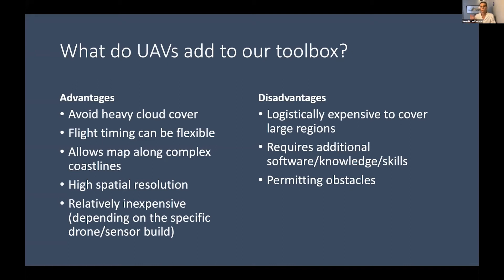Some disadvantages are that UAVs can be logistically expensive to cover large regions. For kelp forests, it's kind of the opposite of intertidal work — you can't cover as much with a drone as you can with a satellite, though you cover more than with in situ diver surveys. It's also technologically challenging; additional software skill sets are needed to use the data. And there are lots of permitting obstacles, which in the marine environment can be a bit different than from a terrestrial perspective.